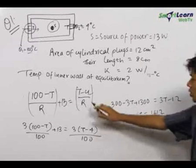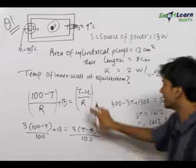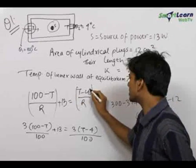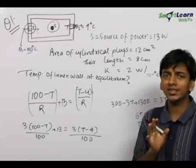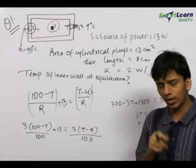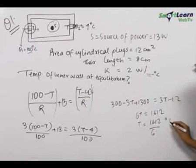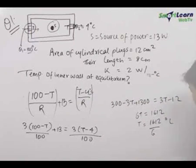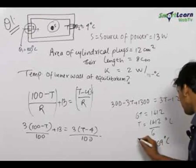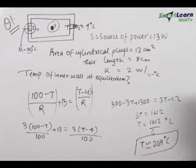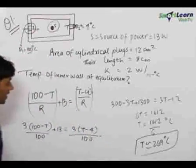This temperature is in degree Celsius, because we wrote the boundary temperatures in degree Celsius. Whenever there is a difference in temperature you can always write it in Celsius or Kelvin — since we wrote it in degree Celsius here, we get the final answer in degree Celsius. So T approximately comes out to be 269°C. The final temperature of the inner walls at thermal equilibrium is 269°C.